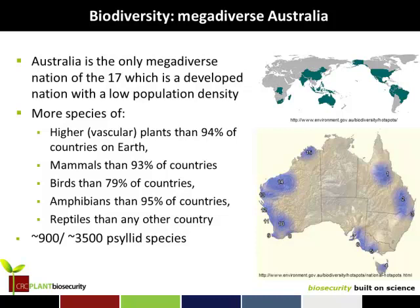Australia is one center of megadiversity on the planet, with a fairly low human population base. Probably the most interesting thing for this audience is that about a quarter of the psyllid species in the world are in Australia, and most of them aren't particularly well characterized at all — including one which has made a host range shift off a native Australian plant onto solanaceous eggplant, which of course has consequences all on its own.